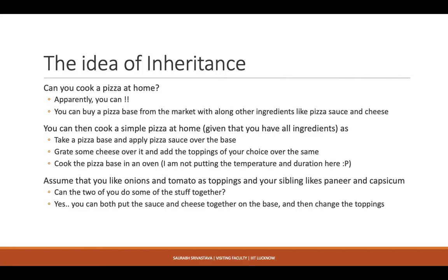Let us first try to understand the idea of inheritance. Assume that you want to make a pizza at home. We have tried it at home during the lockdown period and we know it is possible. The simplest way is to go and buy a pizza base from the market — they sell it in plastic covering, and it works for four or five days, up to a week. You also need pizza sauce, some cheese, and that's pretty much it for a basic pizza.